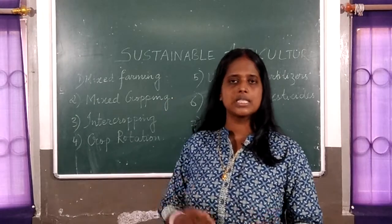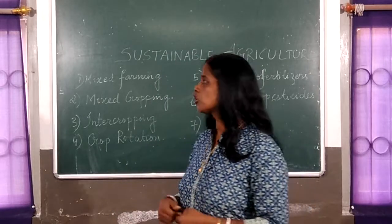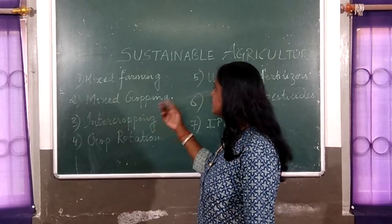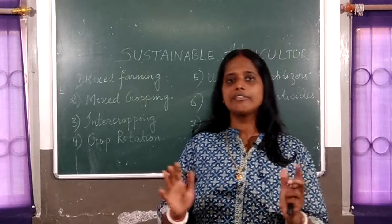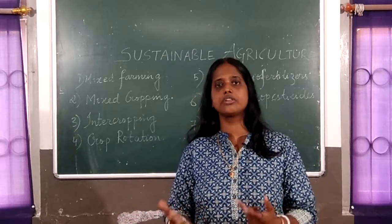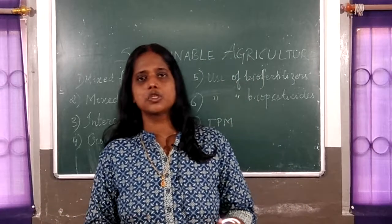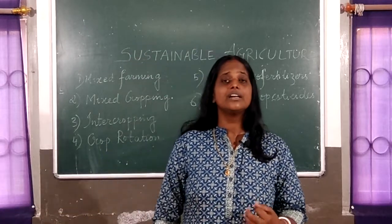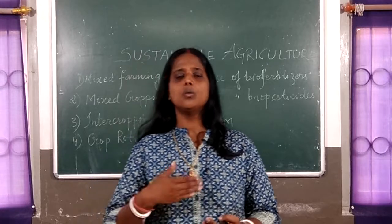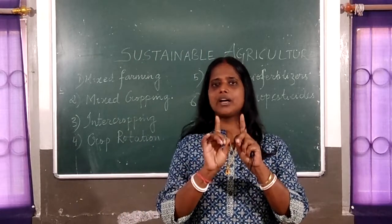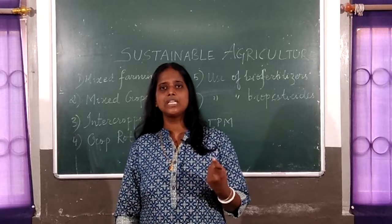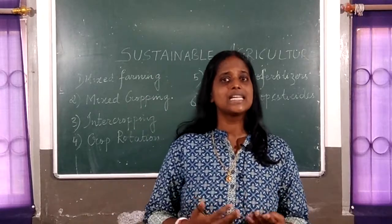The second topic in sustainable agriculture is mixed cropping. Please do not be confused with the two terms. Mixed farming is integrating livestock with crops. But when we say mixed cropping, it means the farmer, instead of growing just one crop on his farmland, chooses to grow two or three crops together. He cannot randomly choose any crop — the two crops should be of two completely opposite characteristics.